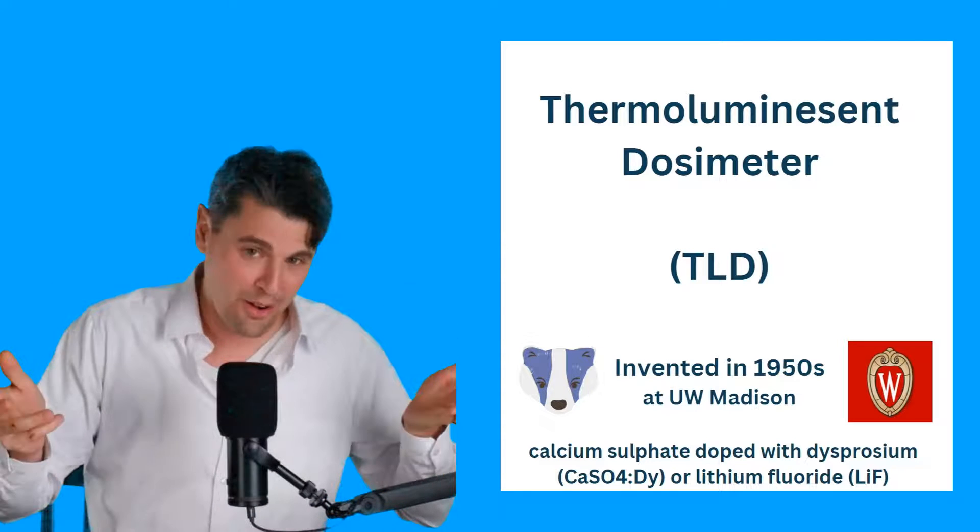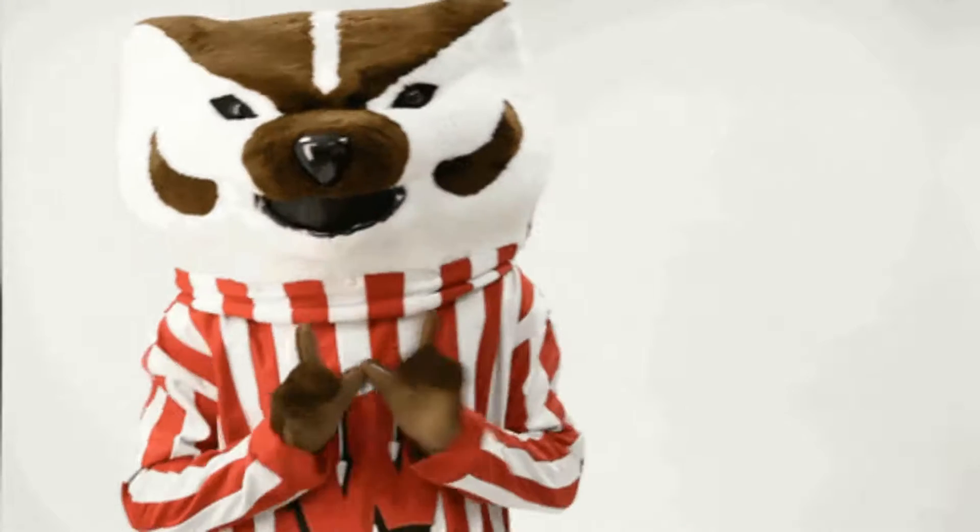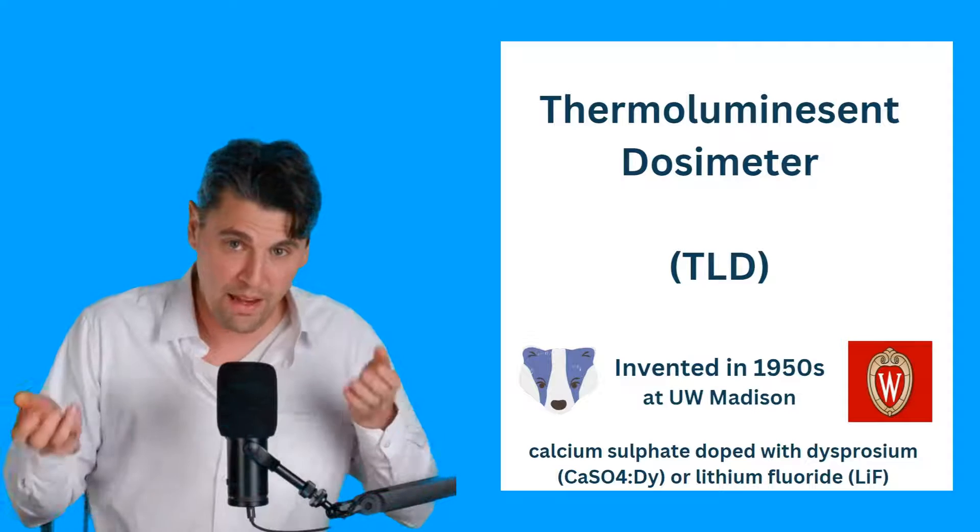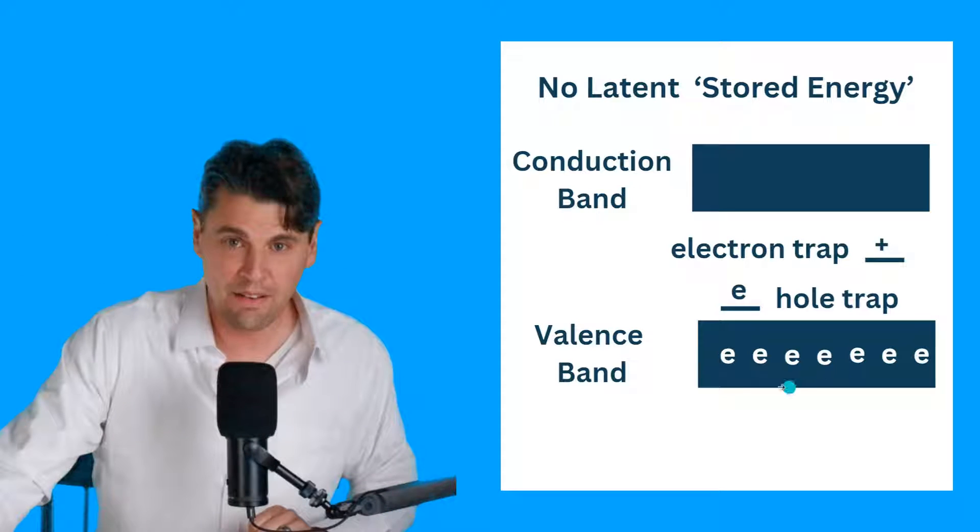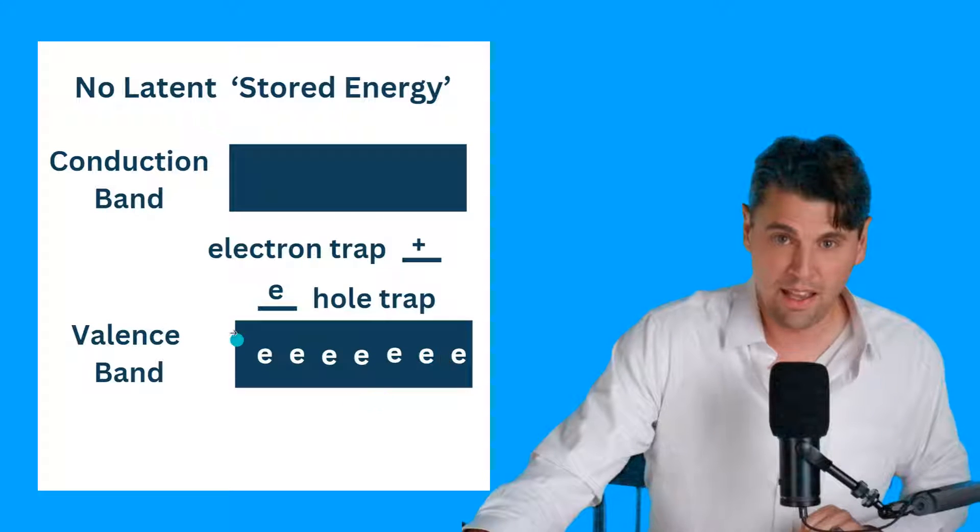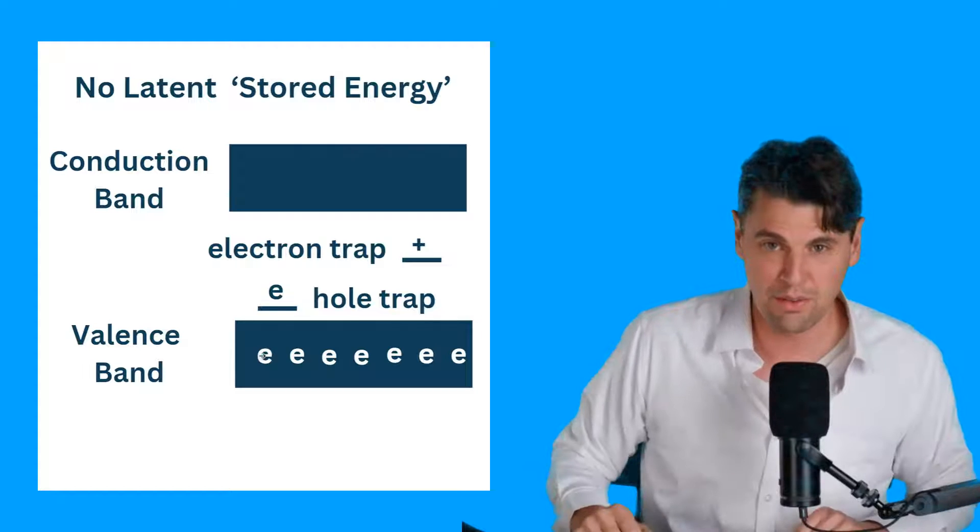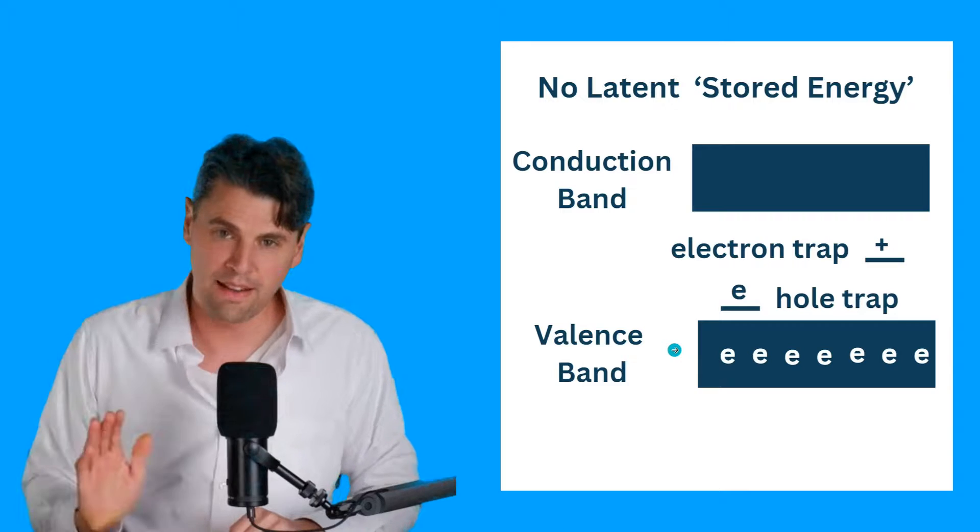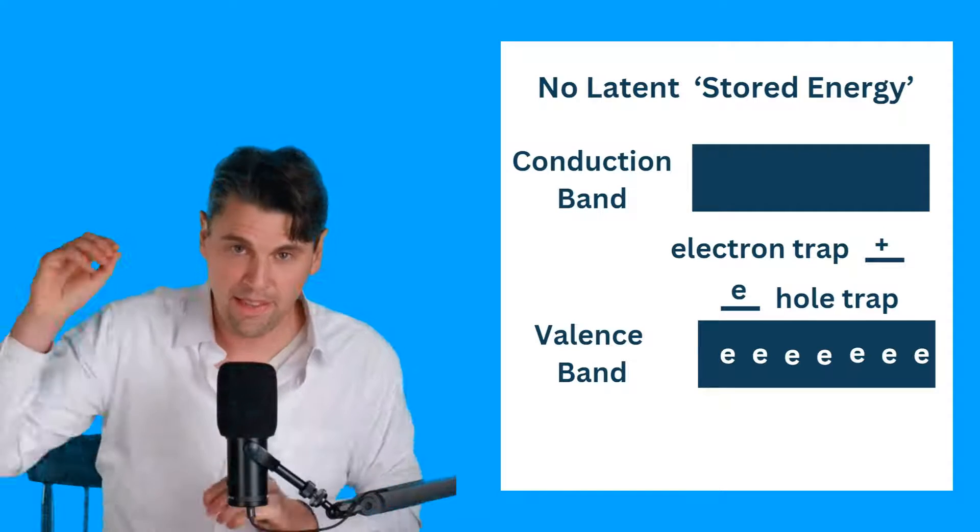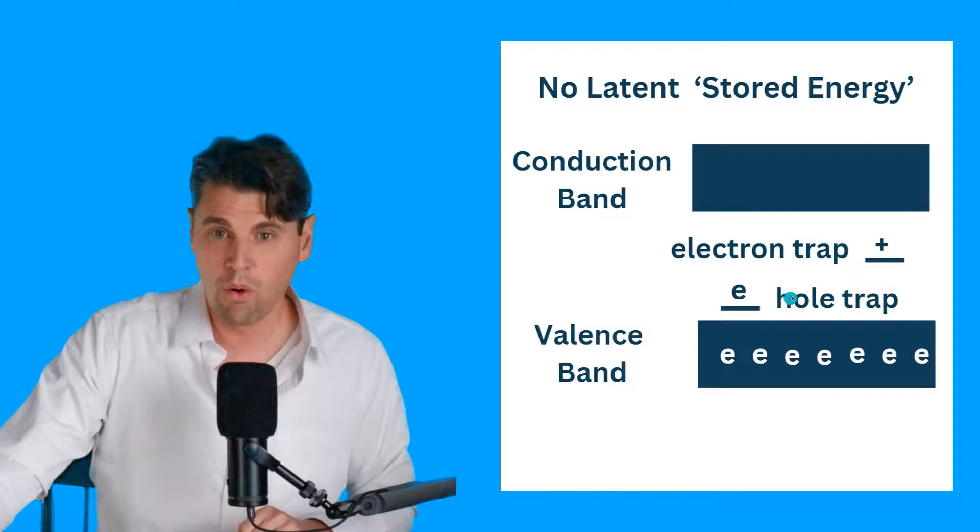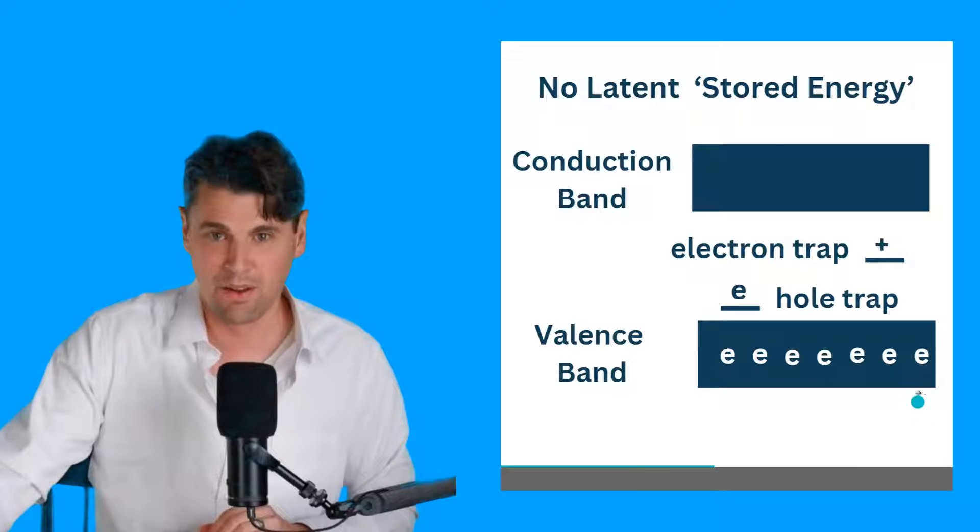You know, I went to University of Wisconsin-Madison. So I always love to point out the fact when things were developed there. And TLDs were actually developed in the 50s at University of Wisconsin-Madison. It could be either calcium sulfate or lithium fluoride, for instance. And in those actual materials, you can think of having a valence band and a conduction band. And in that valence band, you have lots of electrons hanging out here. And then in that conduction band, you have fewer electrons hanging out here. But the electrons can get to that conduction band. And we talk about having the ability to trap electrons. The idea is that higher in this little plot here means it has a higher energy. So if you can get an electron up there in that trap, that electron is going to be trapped with a higher energy. Likewise, a hole or an absence of electron, you could get to a higher energy than this valence band, where all these electrons are hanging out. So right off the bat, we say there's no latent energy stored in this state, where there's not actually an electron trapped yet in an electron trap.